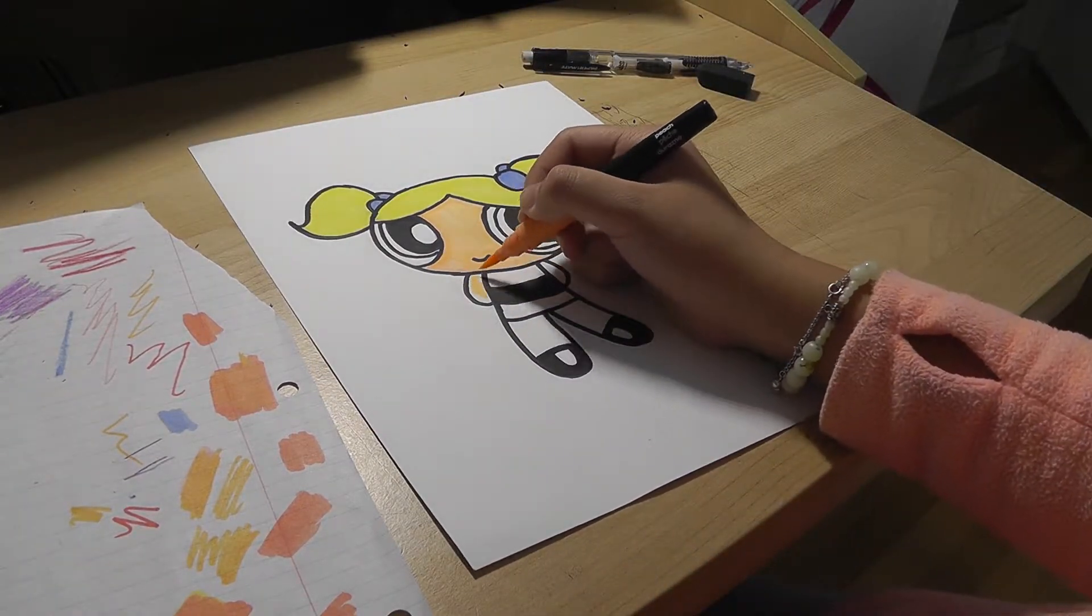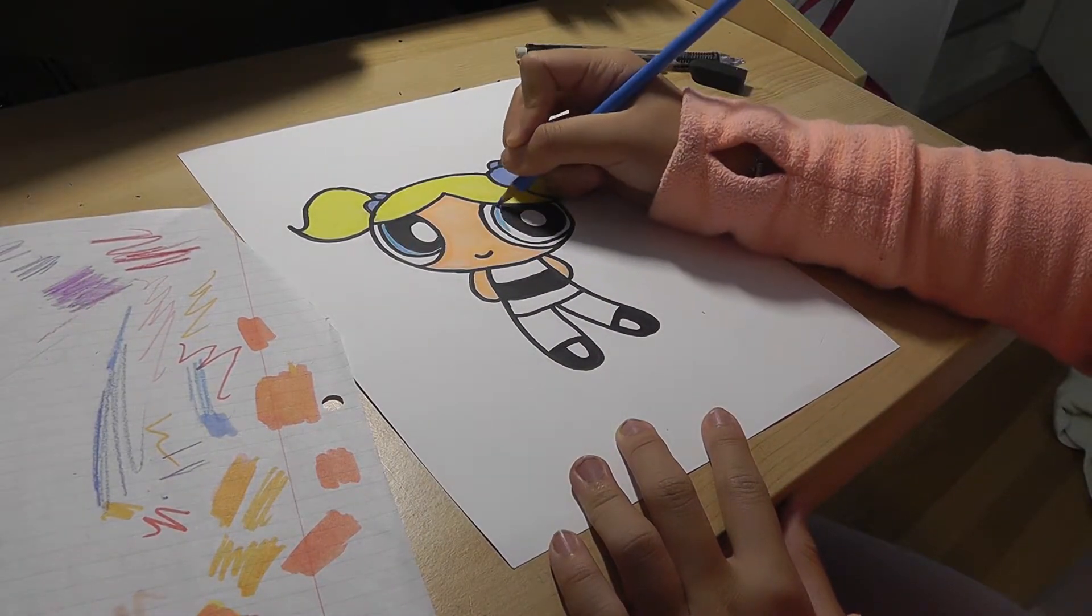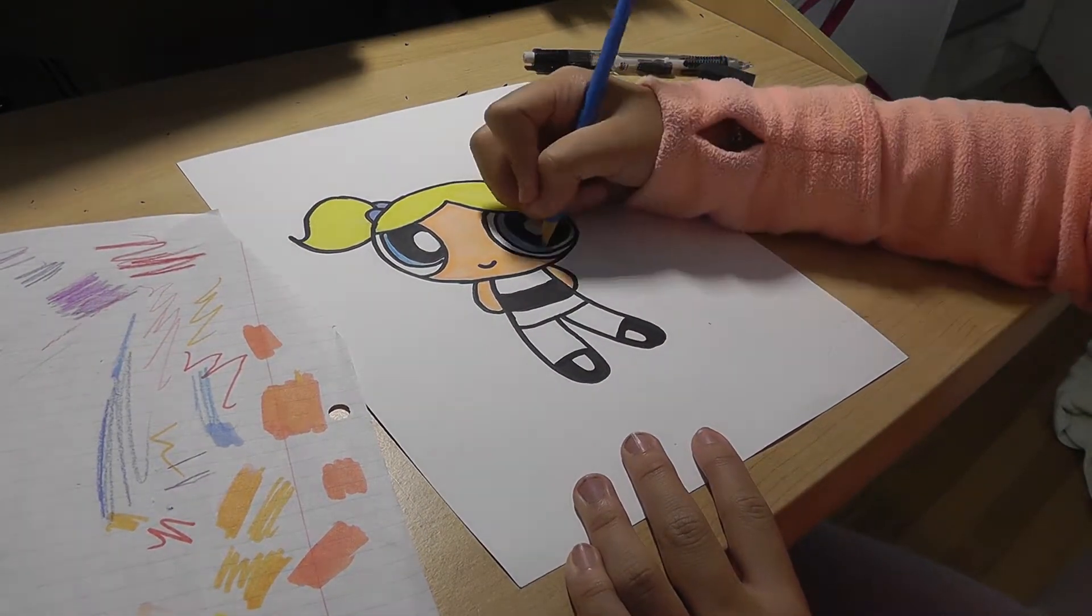Và bây giờ mình sẽ tôn màu phần bên trong của mắt màu xanh. Now we're going to color the inside of Bubbles' eyes blue.